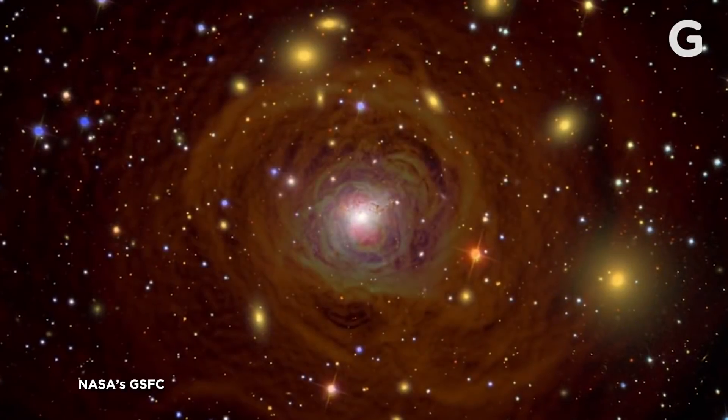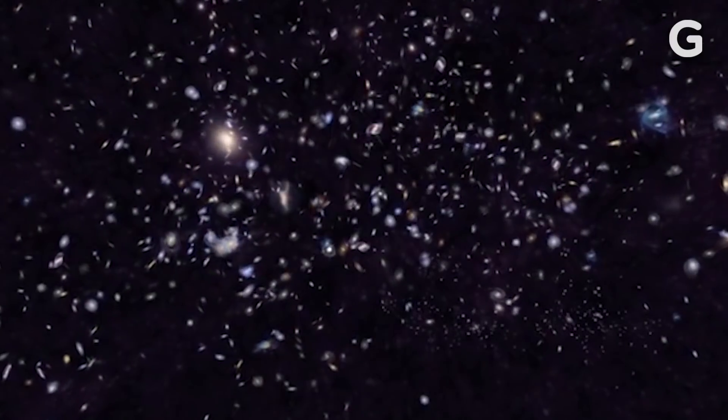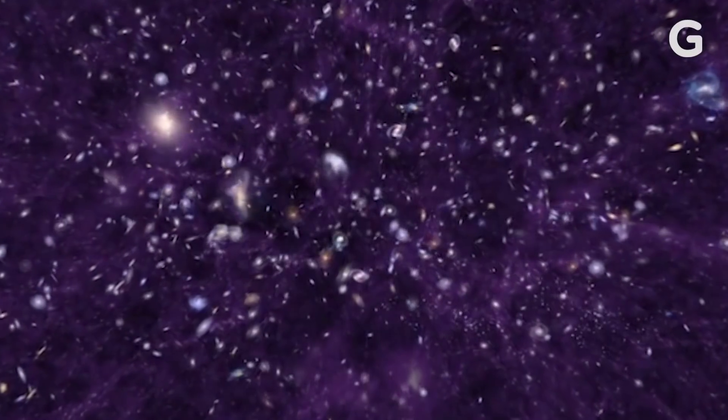Galaxy clusters are basically the biggest thing in the universe. The three major parts of a galaxy cluster are dark matter, which actually makes up most of the mass but it's invisible, so we can't see it.